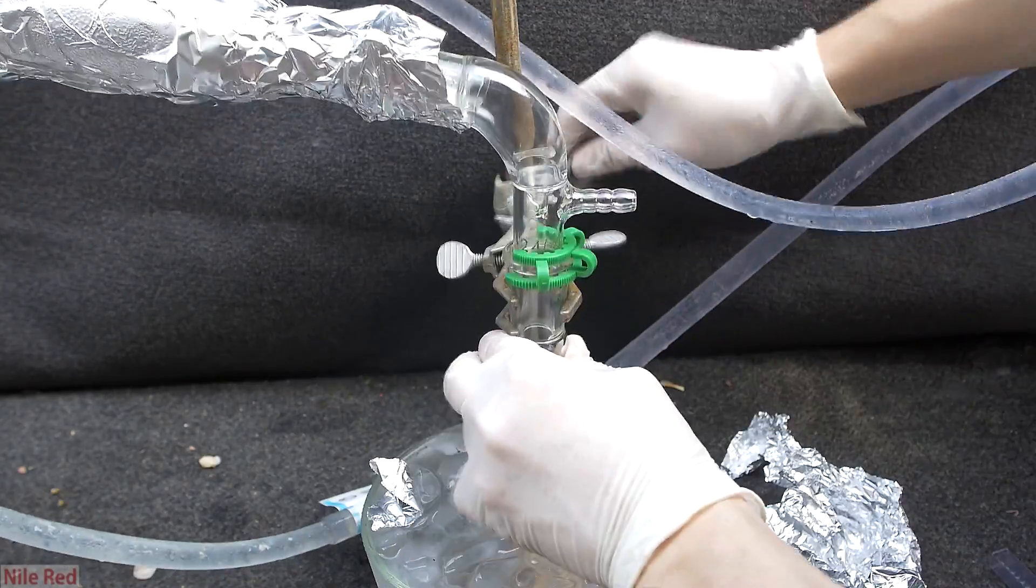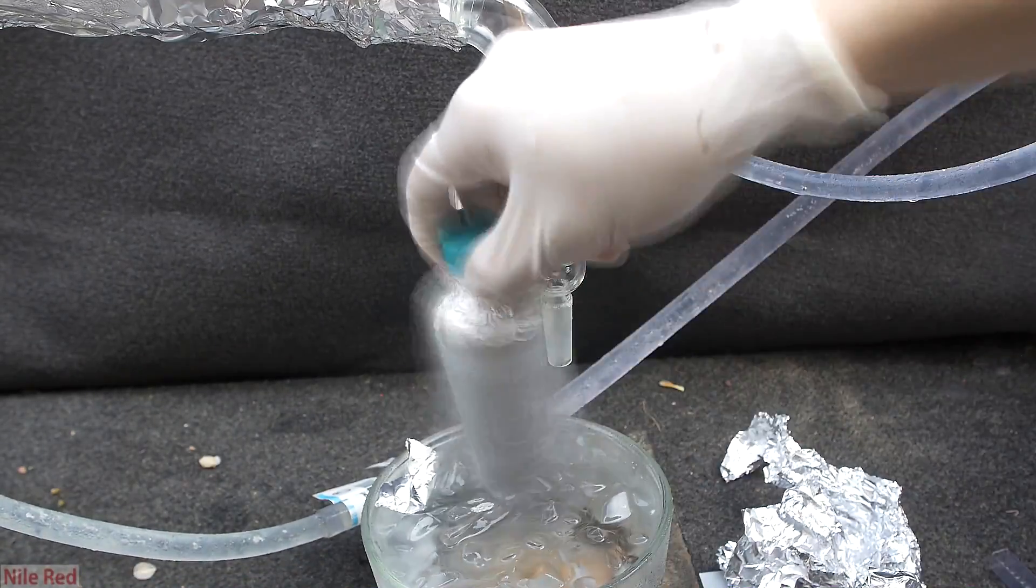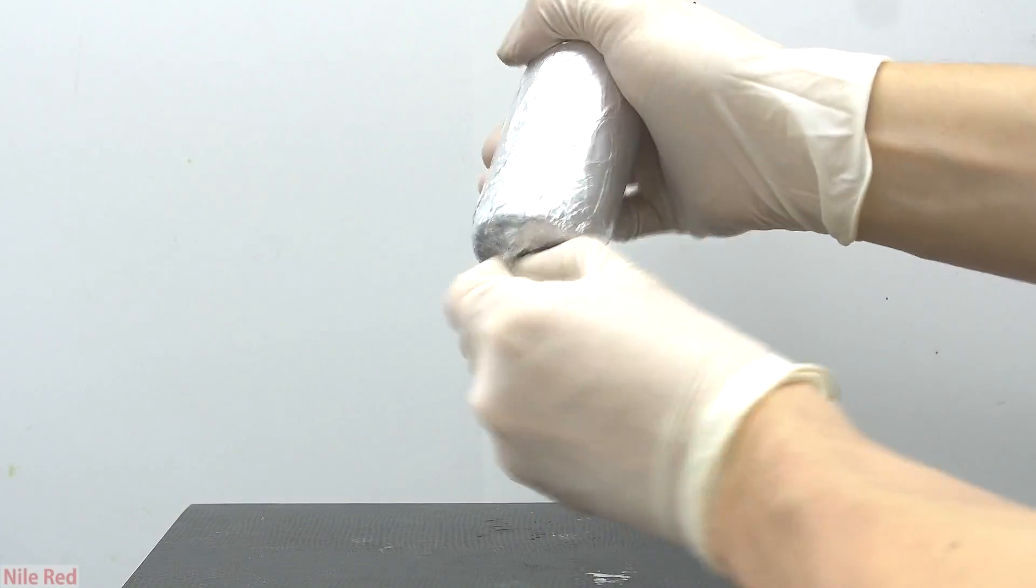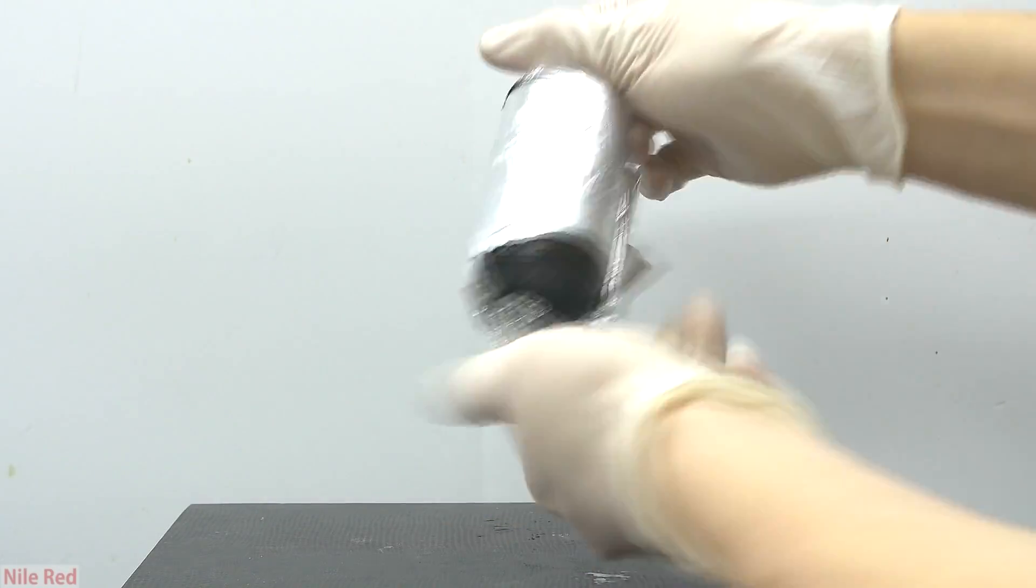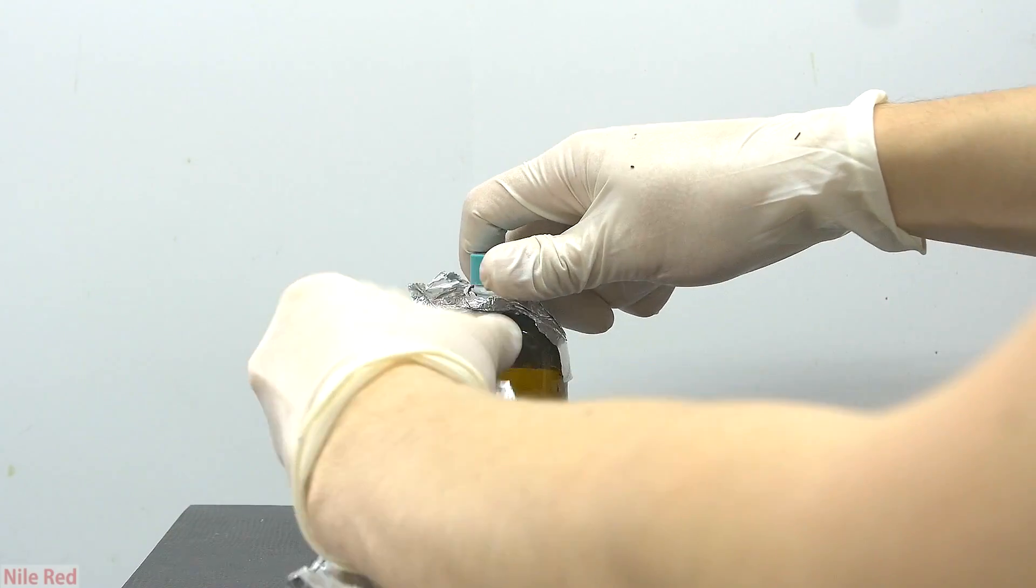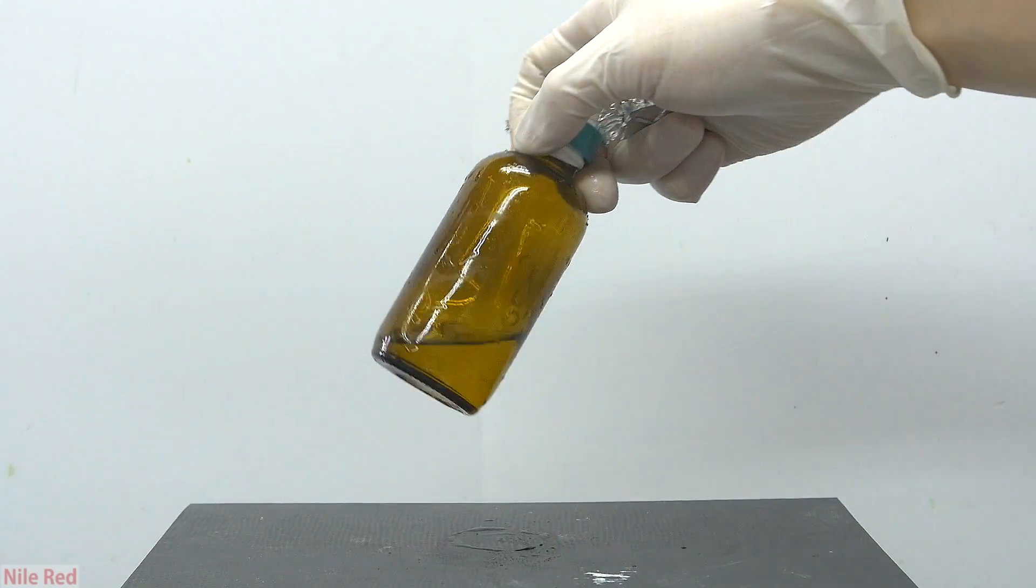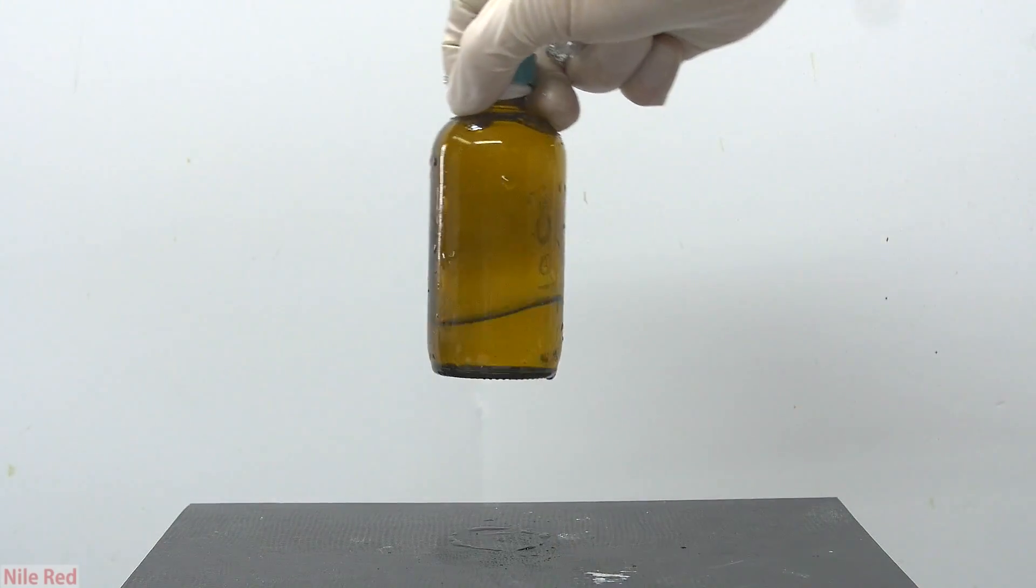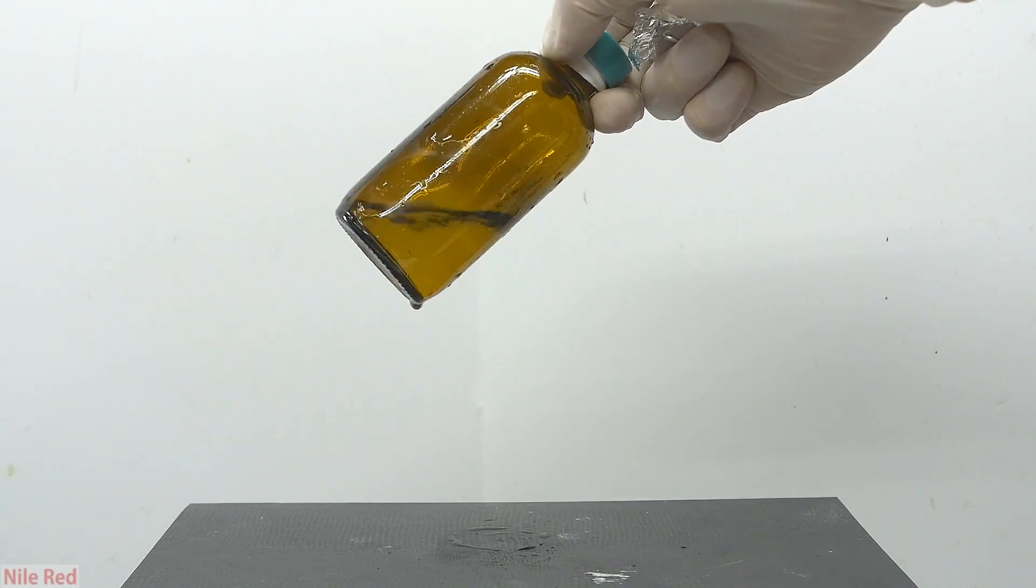At the right side, our receiving bottle is removed, and it's immediately capped. I take the final acrolein product inside, and I remove the aluminum foil just to see visually what we got. And what we see visually is pretty anticlimactic, because acrolein is just a colorless liquid.